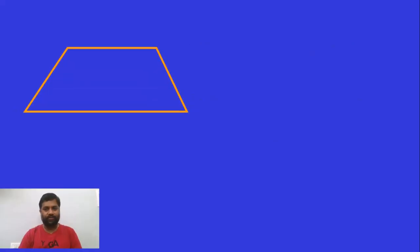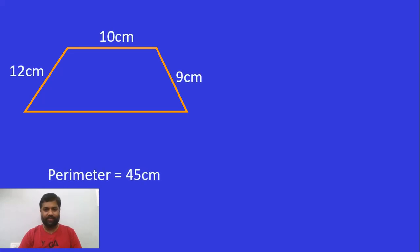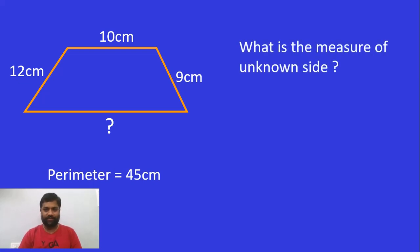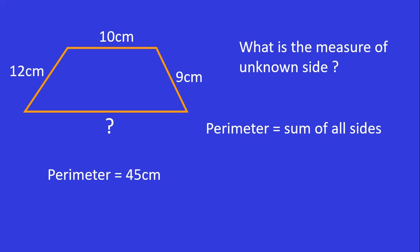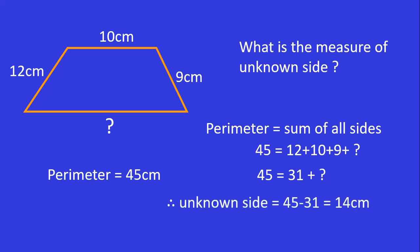Let us take another example: a 4-sided closed polygon. The measurements given are 12 centimeters, 10 centimeters, and 9 centimeters. The perimeter is given as 45 centimeters. What is the 4th measurement? It is unknown. Perimeter equals sum of all sides, so 45 equals 12 plus 10 plus 9 plus the unknown value. That is 45 equals 31 plus the unknown value. Hence, the unknown value is 45 minus 31, which gives us 14 centimeters.